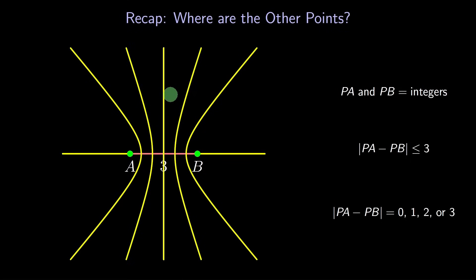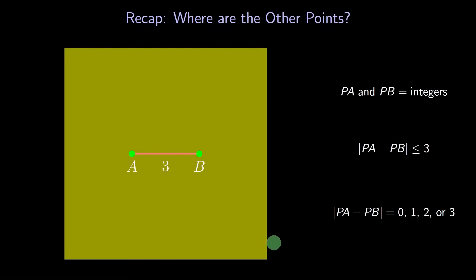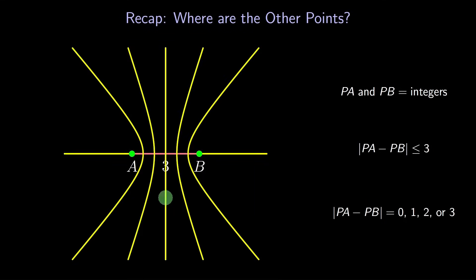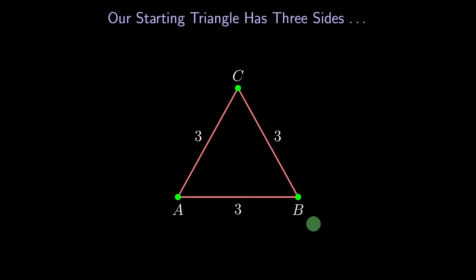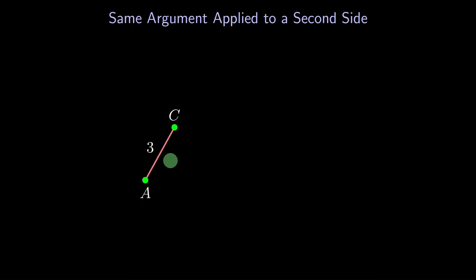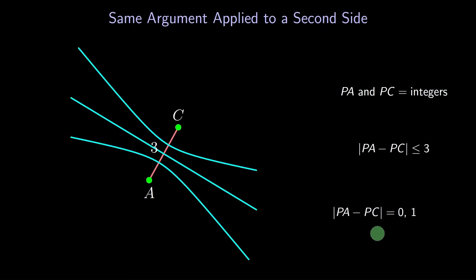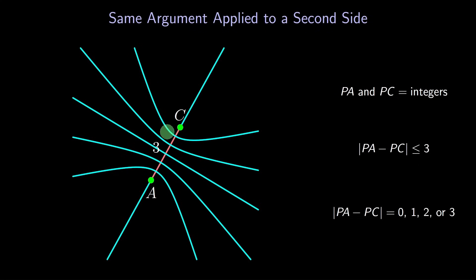That's still not enough information to guarantee that our set of points is finite. After all, a hyperbola has an infinite number of points. So we need more information. Remember our starting triangle ABC? So far we looked at the side AB, but what if we focus on another side? Let's do the same thing to a second side, say AC. Where can a point P in our set be located? It has to be an integer distance from A and C. By the triangle inequality, the difference of the lengths PA and PC is at most three. So again, there are four cases. The difference of the lengths PA and PC is either 0 or 1 or 2 or 3. We get these four new hyperbolas, two of which are degenerate.